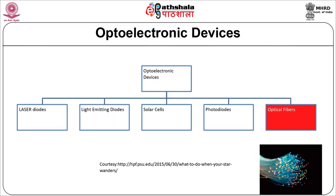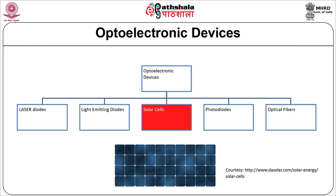Photovoltaic devices produce a voltage when they are exposed to light. The light energy produces a potential difference across the p-n junction depending upon the intensity of the light. Solar cells and photovoltaic cells are widely used in various applications to generate electricity.